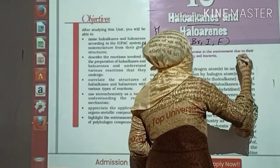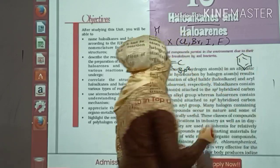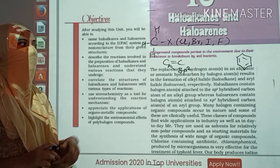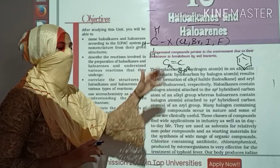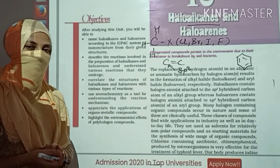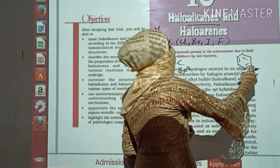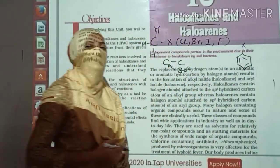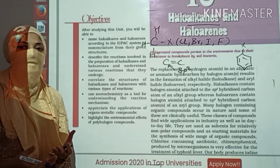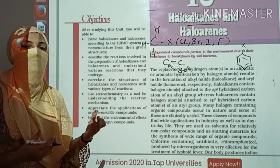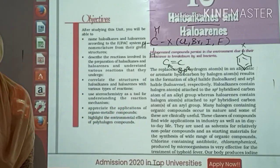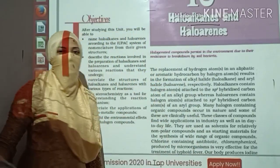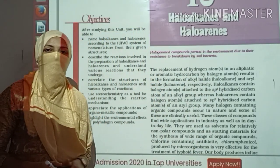What about haloarenes? Haloarenes involve the aromatic benzene ring. When you talk about the replacement of one hydrogen — we know each carbon in the ring holds one hydrogen — so when we substitute any one hydrogen with X, we call such a compound a haloarene. Those are your aromatic benzene ring compounds. So that is the starting of the chapter — we are going to study chemical properties, physical properties, and the preparations of these compounds.